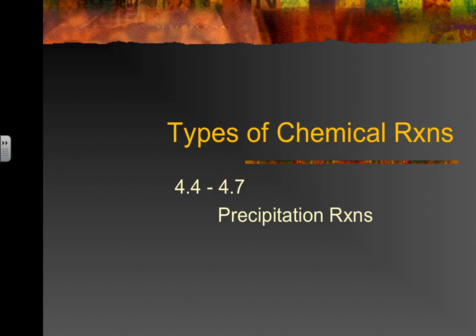We're going to be working out of three — actually four — sections of the textbook: 4.4, 4.5, 4.6, and 4.7. It says precipitation reactions, and my hope is that you recall what precipitation is — it doesn't have anything to do with rainfall. It is when you have a solid that forms from the mixture of two liquids. If you take two liquids and mix them together, you'd expect to get more liquid, but instead we miraculously create a solid — that's a precipitate.